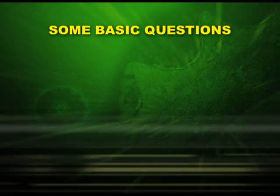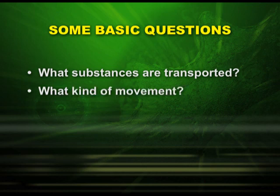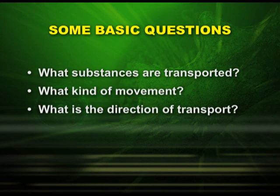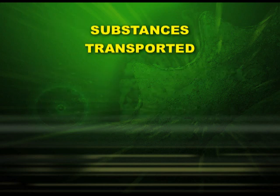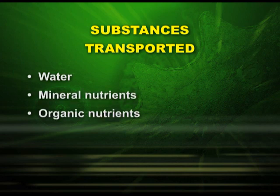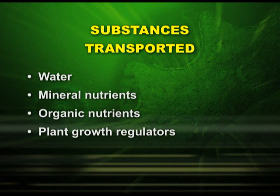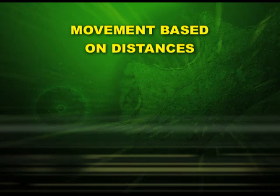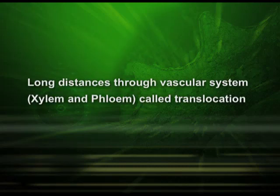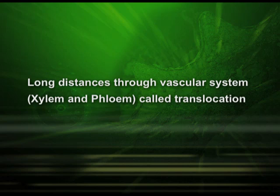Before we start, let us ask some basic questions: What substances are transported? What kind of movement and what is the direction of transport? The substances transported are water, mineral nutrients, organic nutrients, and plant growth regulators. Movement is classified by distance into short distances and long distances. Short distance transport includes diffusion and cytoplasmic streaming. Long distance transport takes place through the vascular system — xylem and phloem — and this is called translocation.